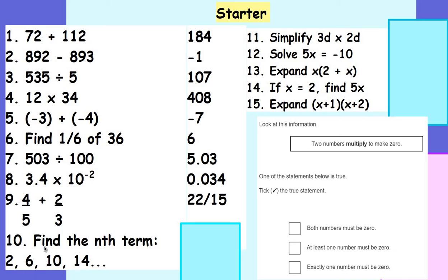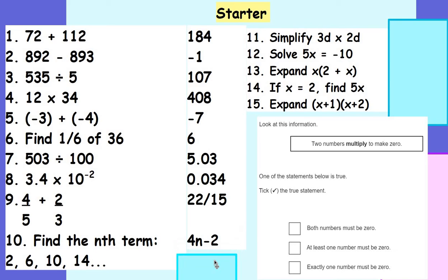To find the nth term, we look at the difference between the terms and that's 4, so we know it's 4n. But then to go from 4n to our first number which is 2 — 4 times 1 would give me 4, and I need to subtract 2 to get 2 — so it would be 4n take away 2.